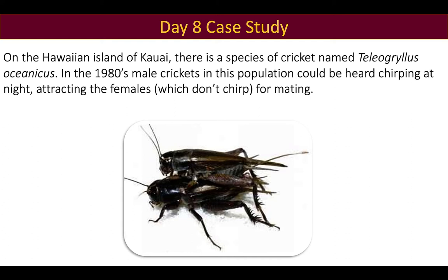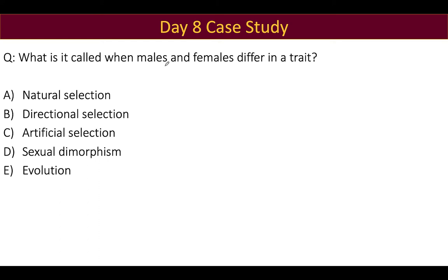This case involved crickets found on the island of Kauai. In the 1980s, male crickets of this species could be found chirping all night long — they chirp to attract females, and the females do not chirp. The first question was: what is it called when males and females differ in a trait? The correct answer is sexual dimorphism — when males and females have some difference in the way they appear. Usually, but not always, it's the male that has bright color or makes a certain noise, as we see in these crickets.